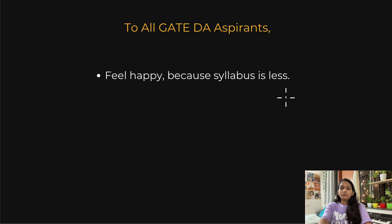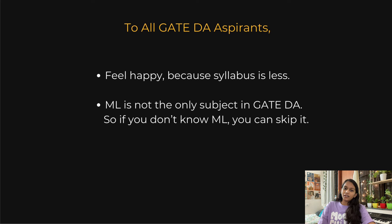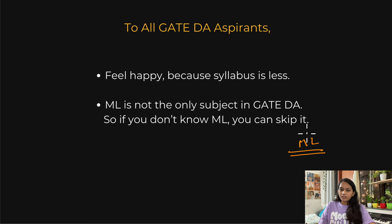To all GATE DA aspirants — feel happy because the syllabus is very less compared to GATE CSE. GATE DA syllabus is almost half of the GATE CSE syllabus. Even if you're just starting preparation, you can still cover all the important topics in the next three months. In fact, covering all these topics won't take more than two months. Also, people think GATE DA is all about ML — but ML is not the only subject. If you want to skip ML, you can study all the other subjects like data structures, algorithms, Python programming, DBMS, etc., and skip ML if you don't know it or are afraid of it.